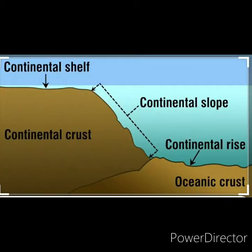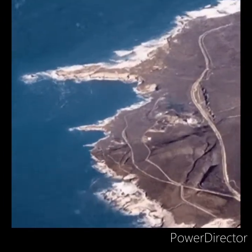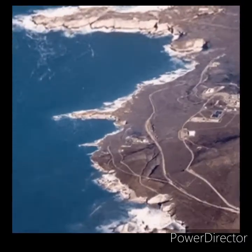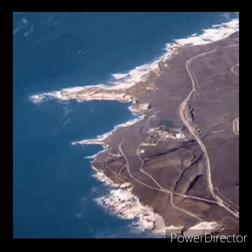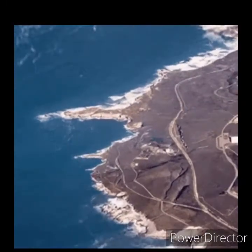First we will look at the continental shelf. A shallow and gently sloping platform extending out from the adjoining continental landmass into the sea is called continental shelf. It is almost a uniform zone of seabed with a gentle gradient. The continental shelves are shallower, which enables sunlight to penetrate through the water and encourages abundant growth of grass, seaweeds and plankton.